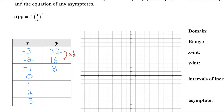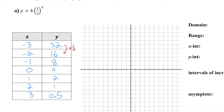So my next y value just cuts 16 in half, it's going to be eight. We could calculate that by substituting negative one into the equation for x. But I noticed the pattern, so I'm just going to keep cutting my y values in half: four, two, one, and 0.5. Now I'm going to plot all of these points. On the y axis I'm going to make my scale go by twos, but I'll label every other spot. And my x axis I'll go by ones.